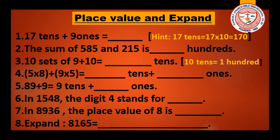Number 6: Here 4 stands for what? Do you remember the place value chart? So 4 is in the tens place — write the answer. Number 7: In 8,936, find the place value of 8. Number 8: Expand 8,165.